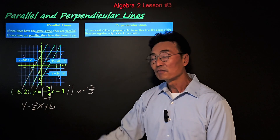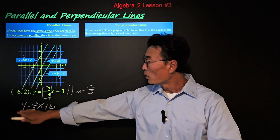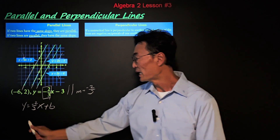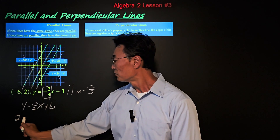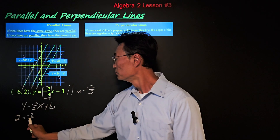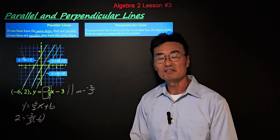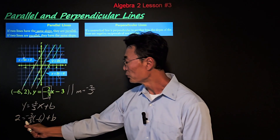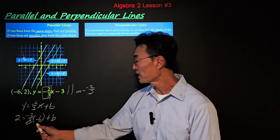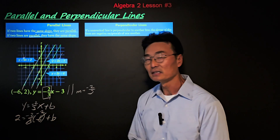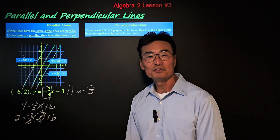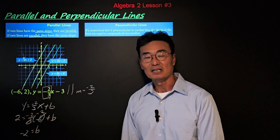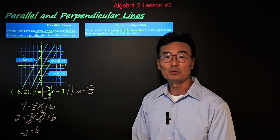We can find the value of b by plugging in the point that's on the line, which is negative 6 comma 2. So we have 2 for the value of y, and we plug in negative 6 for the value of x, plus b. We cancel off the 3 and the 6, making that negative 2, and then negative 2 times negative 2 is positive 4, giving us b equals negative 2.